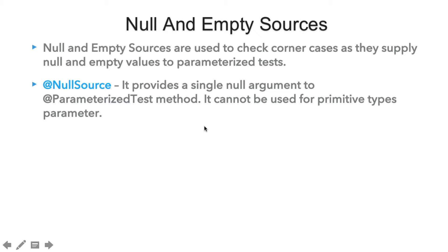In order to provide a null value, we can use the annotation @NullSource. It will provide a single null argument to our @ParameterizedTest. Because we can't provide null values using the @ValueSource annotation, which we discussed in our last lecture, we have to use @NullSource. Note that we can't use @NullSource for primitive types, because those don't accept null values.